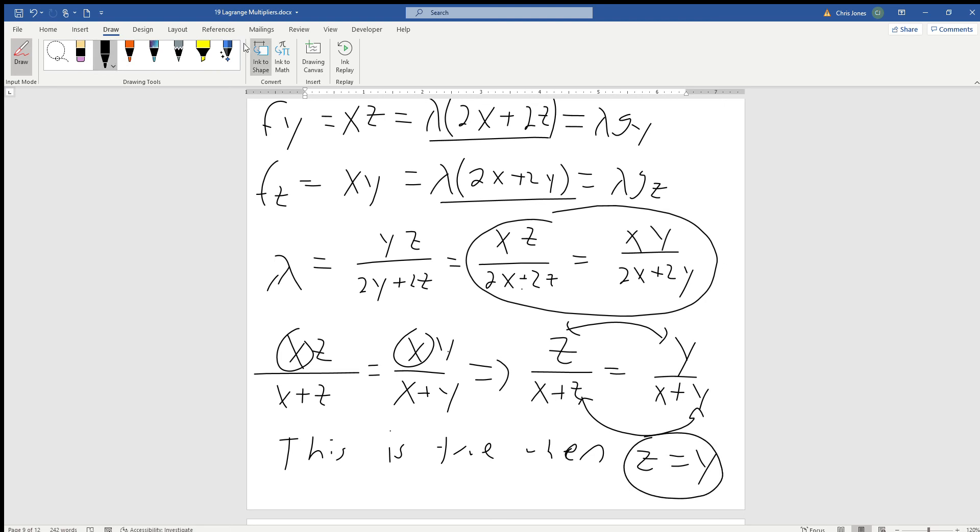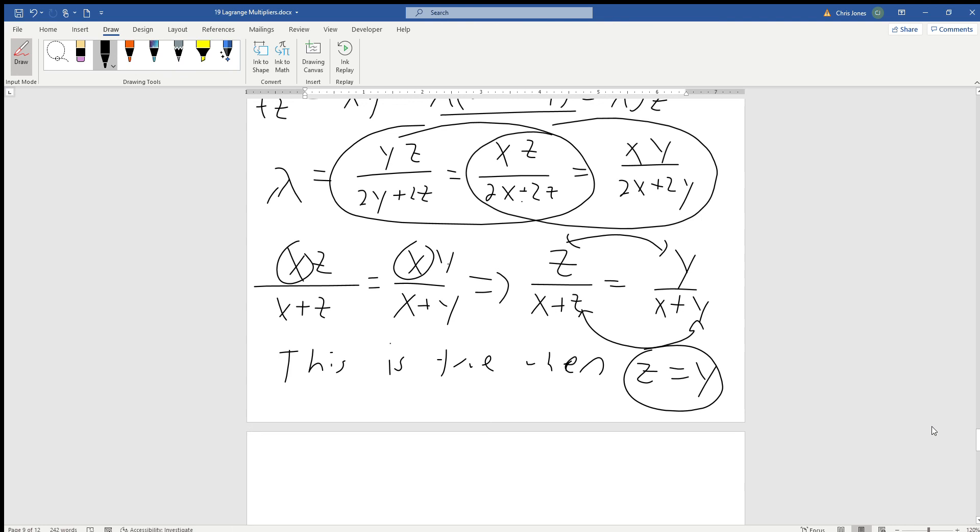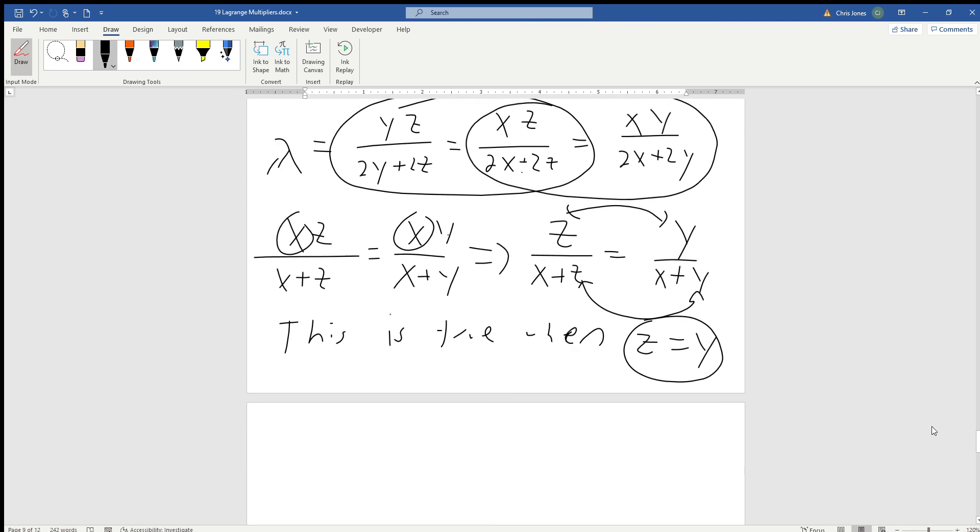Because we're going to have to go back and pick two other equations. Let's just pick these two, the first two that we have. We're going to do the same exact trick. So yz over 2y + 2z is going to be equal to xz divided by 2x + 2z.